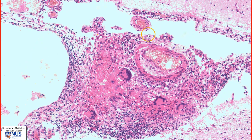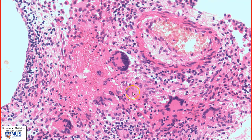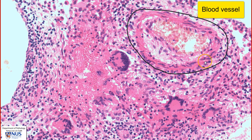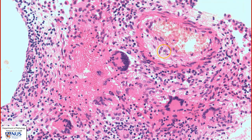Here is another such area where we can see necrosis, granulomas comprising these epithelioid histiocytes, and Langhans-type giant cells. We also have a blood vessel here that is damaged with some proliferation in the subintimal tissue.